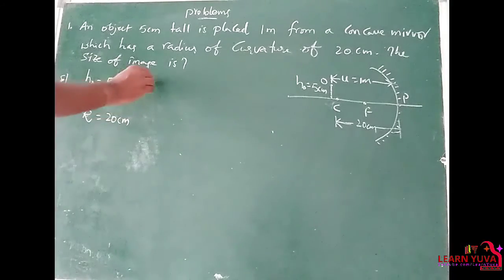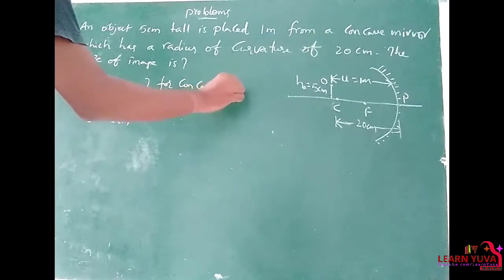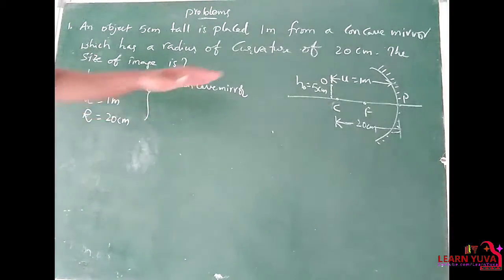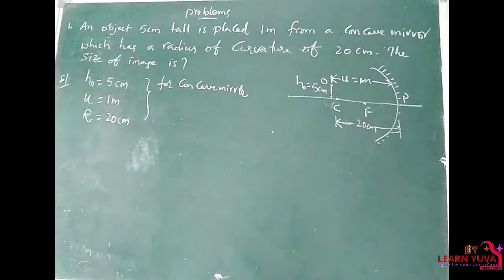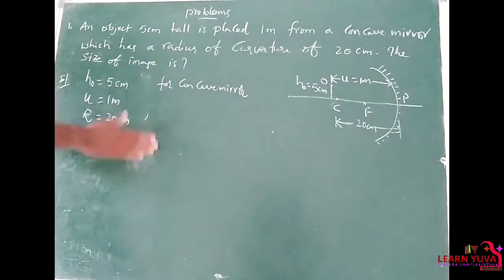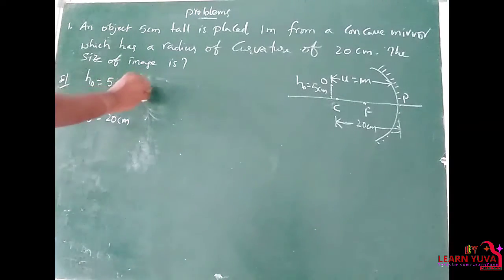For a concave mirror, the height of the object is placed above the principal axis. By sign conventions, the height of the object is equal to plus 5 cm.